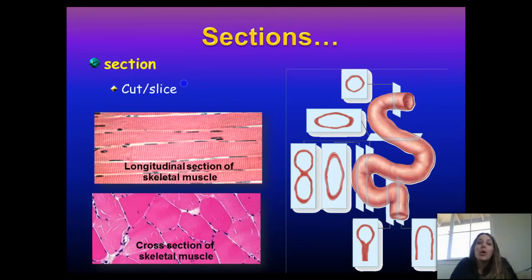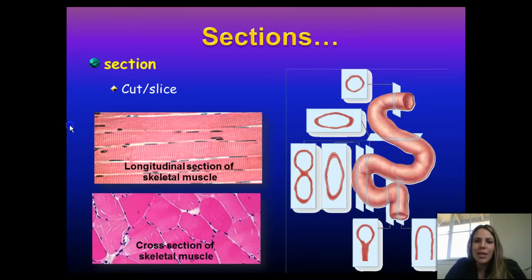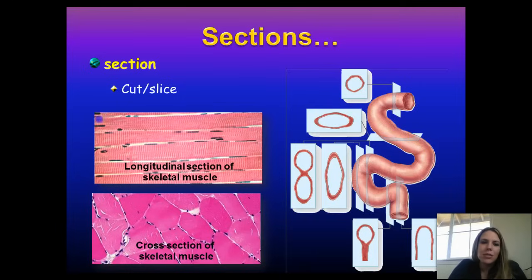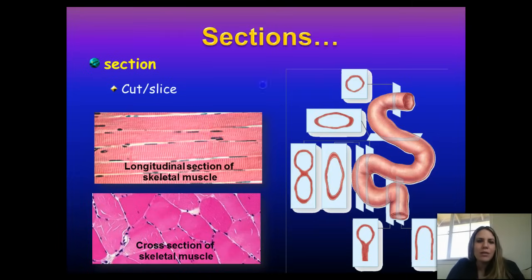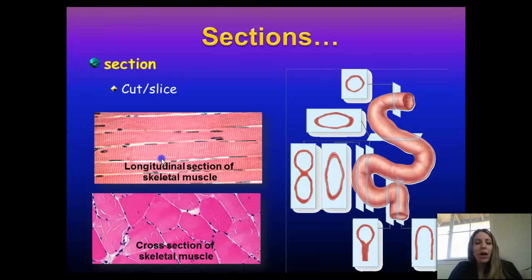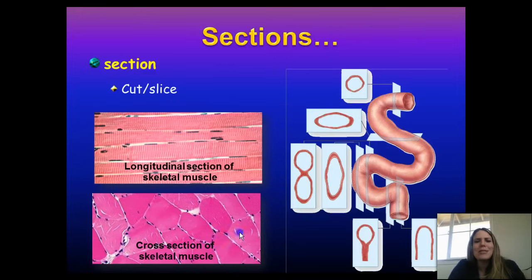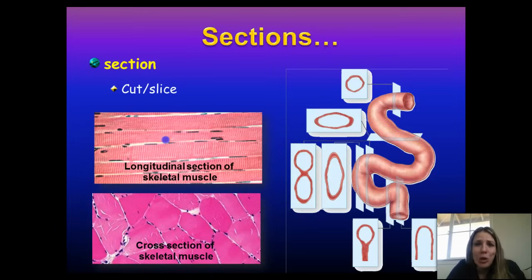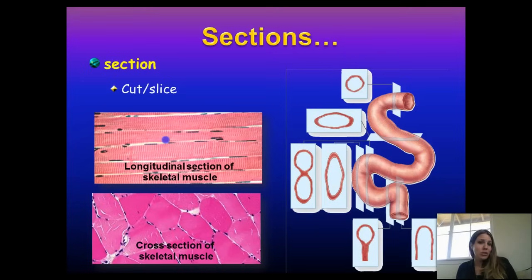Here is a longitudinal section of skeletal muscle — your bicep. Made into a slide, it would show stripes called striations. But if you cut across the bicep and made a print, it would look very different. A cross section of skeletal muscle looks completely different from a longitudinal section — it's the same tissue, just a different section. So it's important to understand what kind of section you're dealing with.